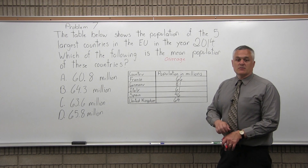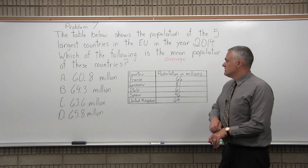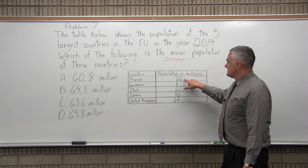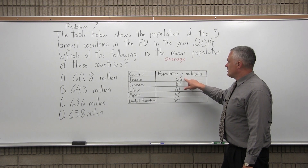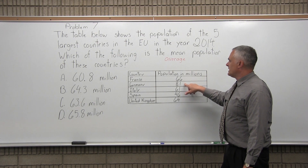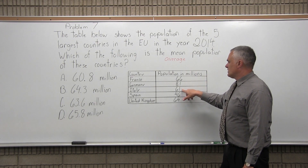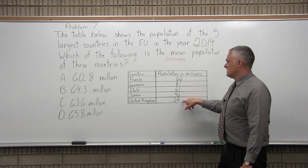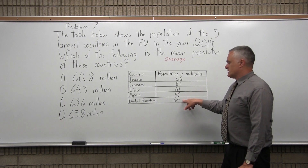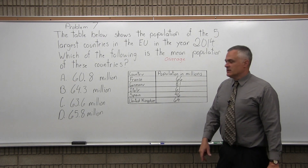So what we have to do is find the average of the different populations of the countries. France has 66 million people. In 2014, Germany: 81 million. Italy: 61 million. Spain: 46 million. United Kingdom: 64 million.